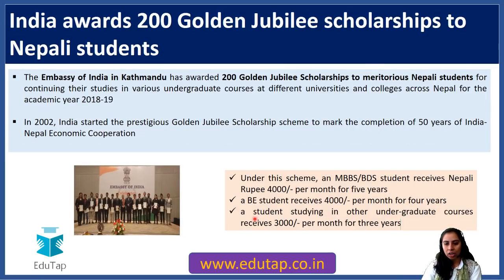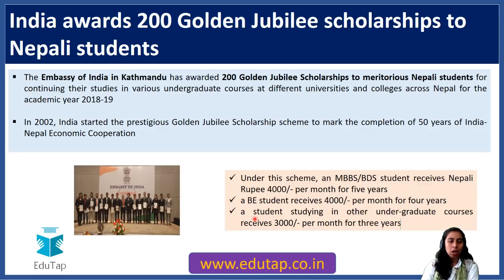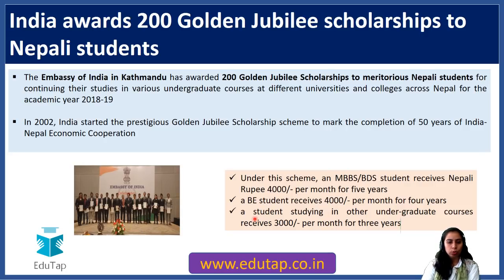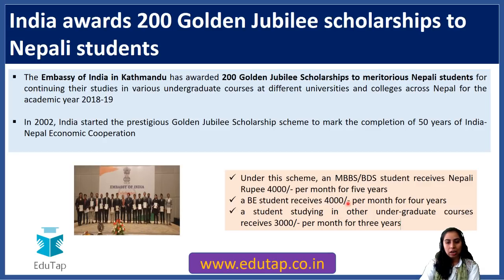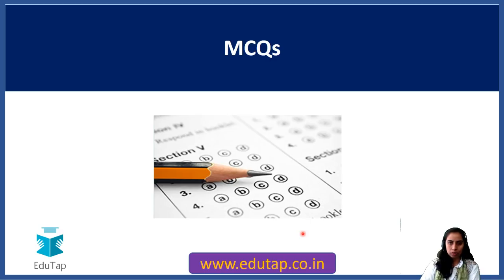India has awarded Golden Jubilee Scholarships to Nepali students. The Embassy of India in Kathmandu, Nepal, awarded 200 Golden Jubilee Scholarships to students of Nepal. This scholarship program started in 2002. The scholarship amount for MBBS or BDS students is 4,000 rupees per month for 5 years; for BE students it is also 4,000 rupees; and for students in other undergraduate programs it is 3,000 rupees per month.